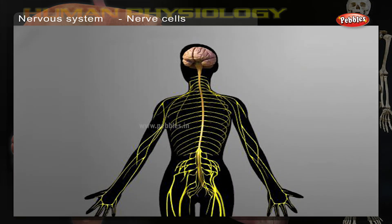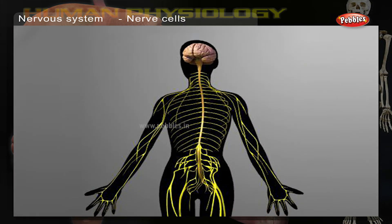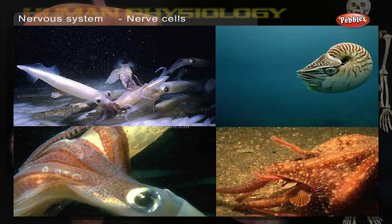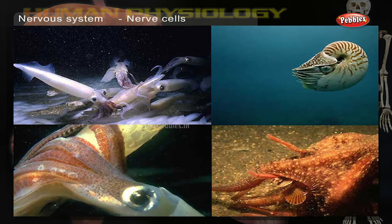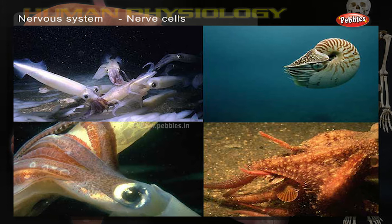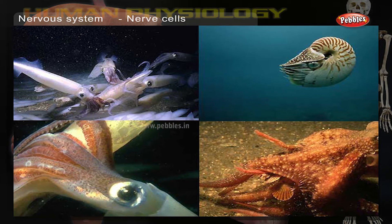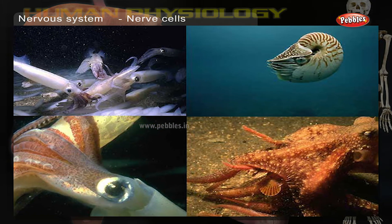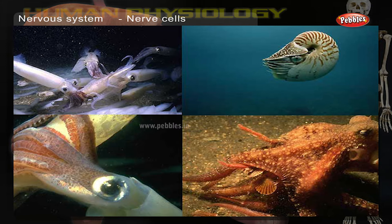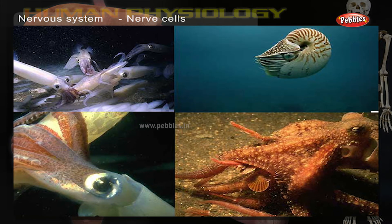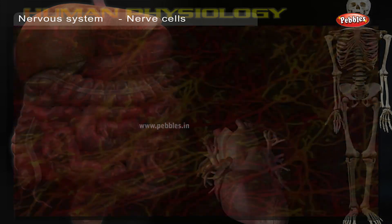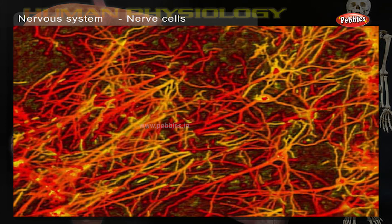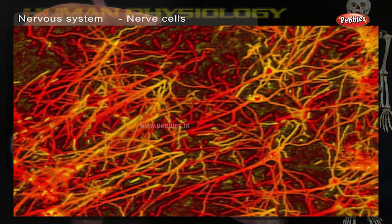Neuroscience is the study of the nervous system. Nervous systems are found in most multicellular animals but vary greatly in complexity. The human body contains 100 billion nerve cells.